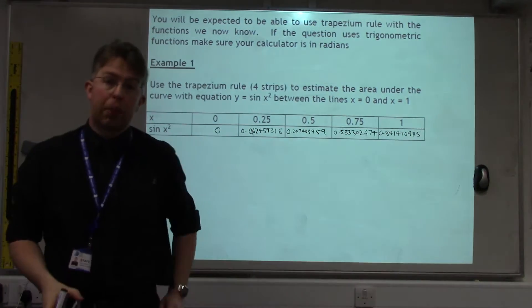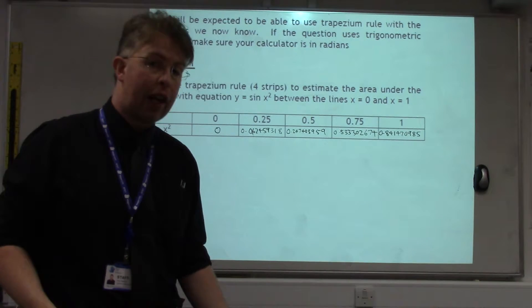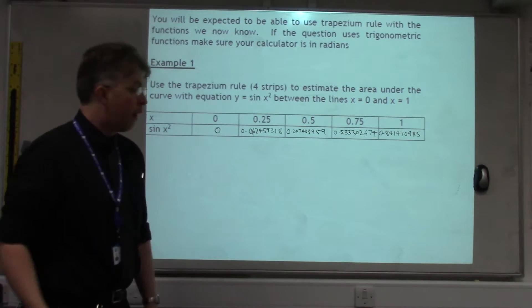These values are given to 9 decimal places. In the exam, they'll give you the level of accuracy they want for rounding.